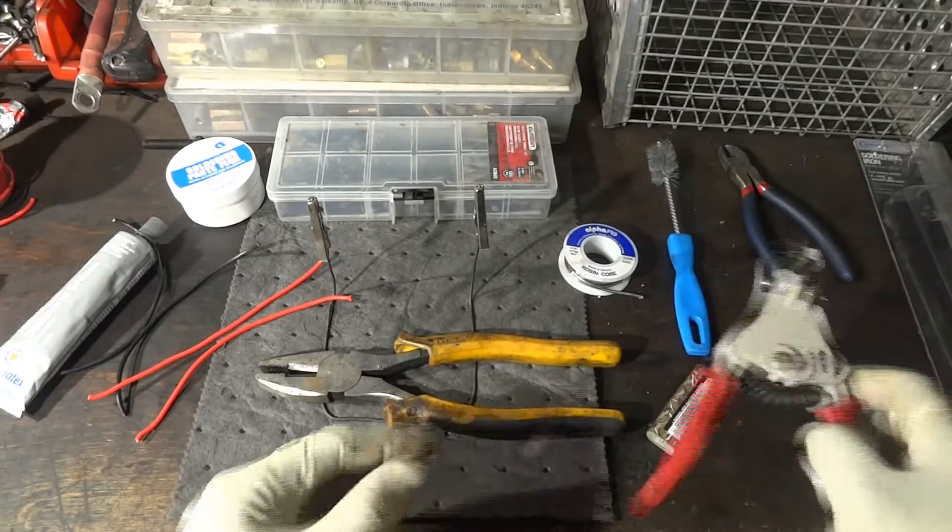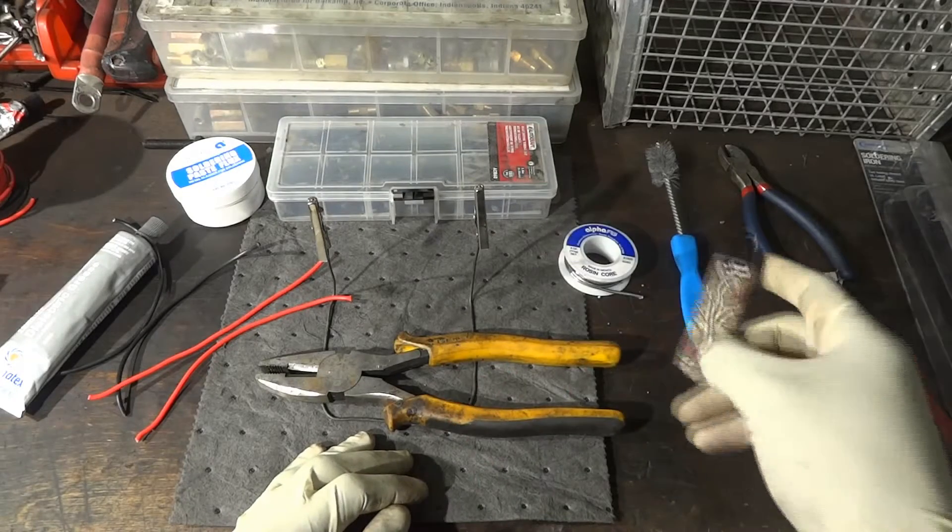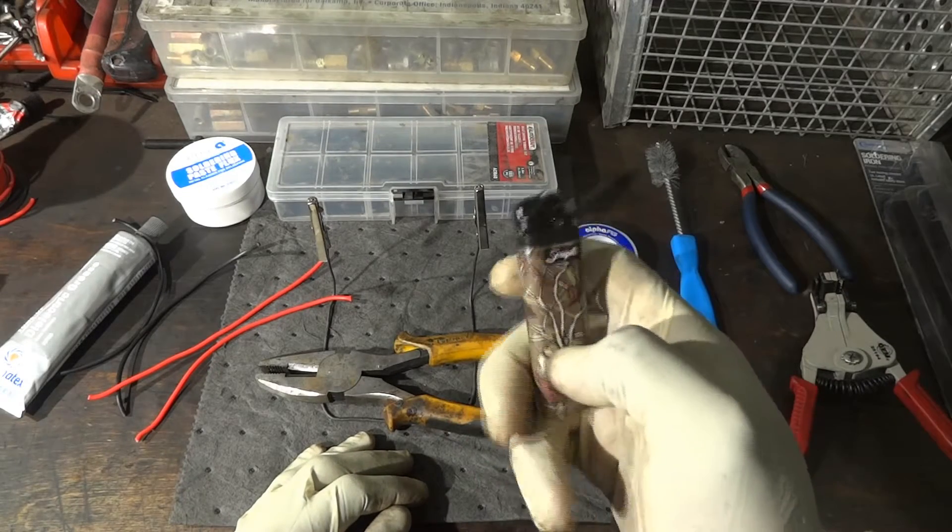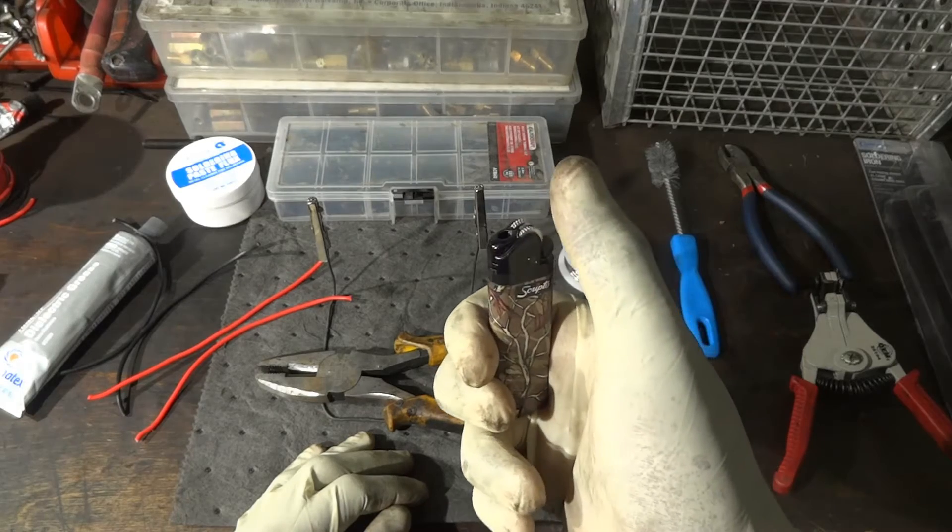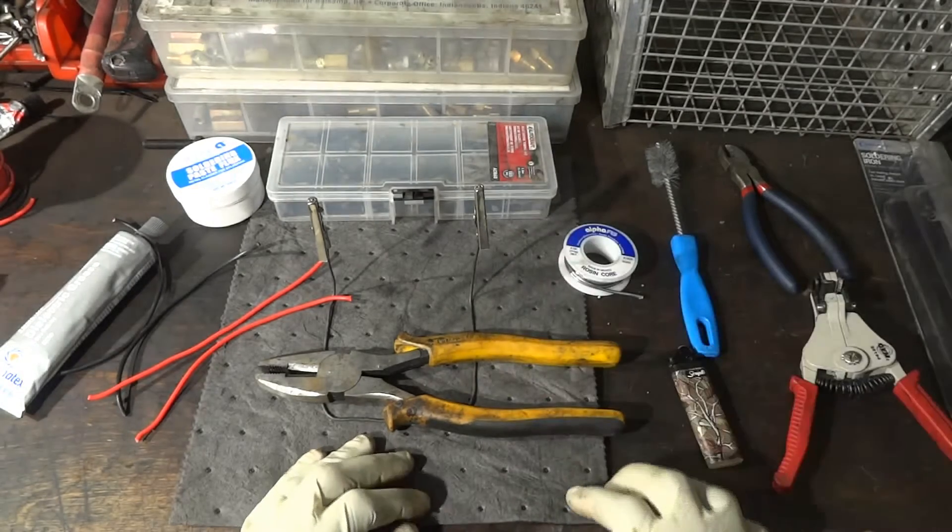I'm going to be using a wire stripper and this cigarette lighter to shrink our heat shrink tube once we're done soldering.